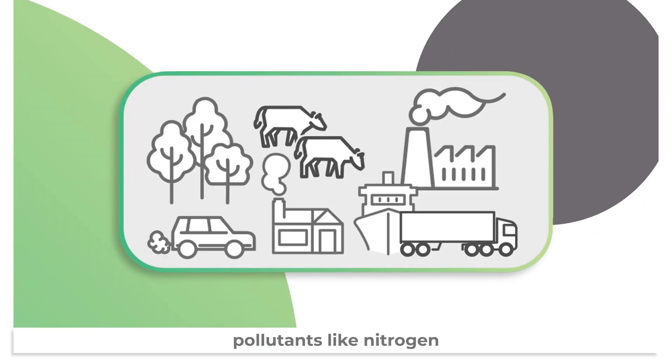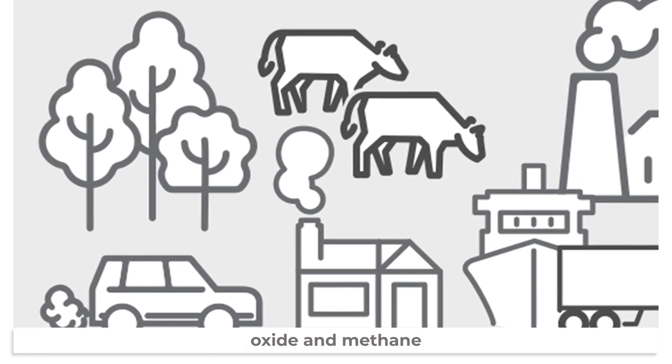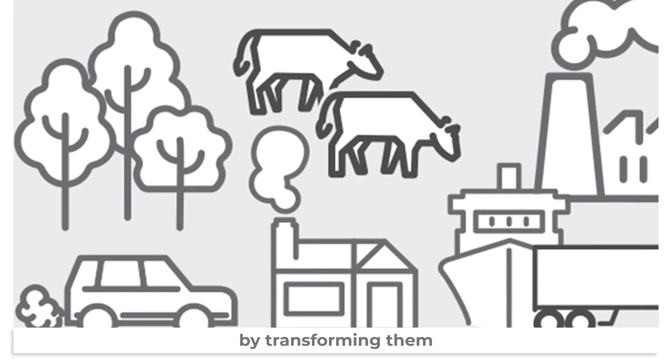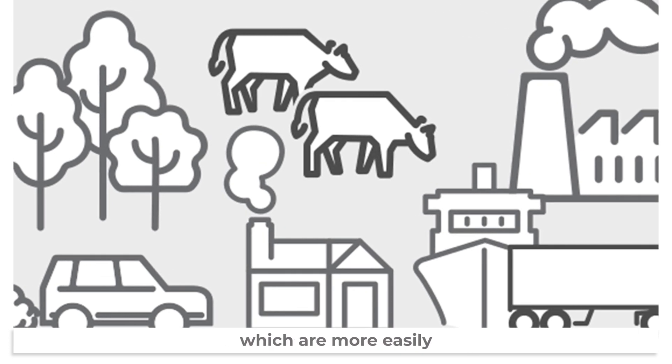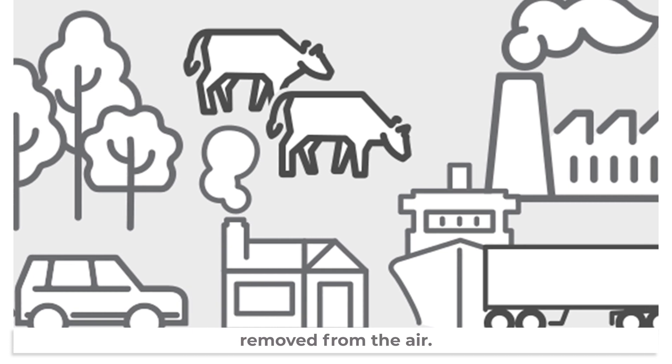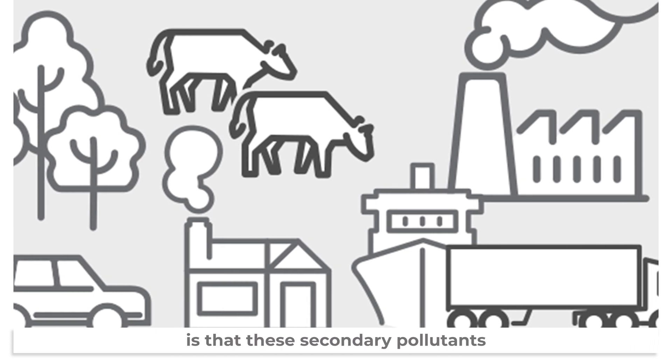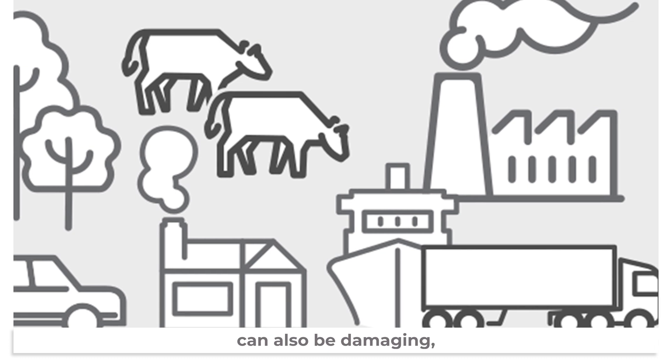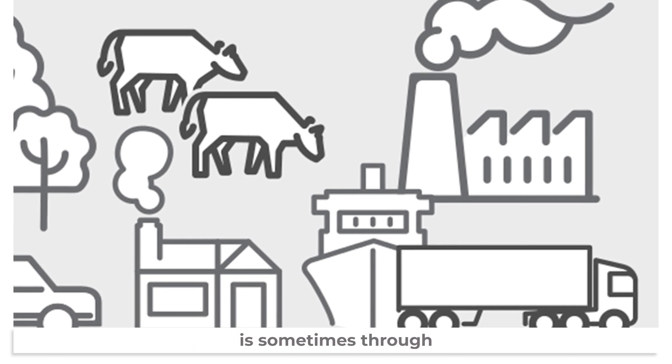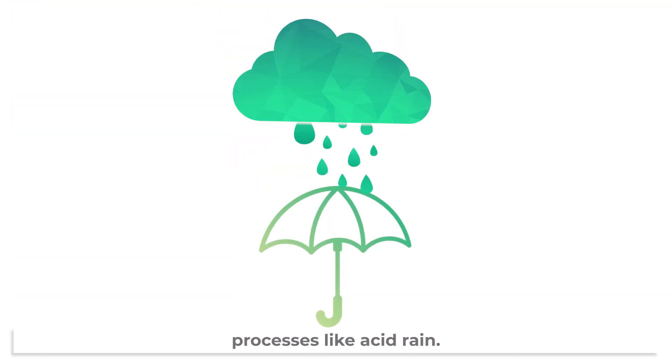Radicals help to regulate harmful pollutants like nitrogen oxide and methane by transforming them into oxidized versions, which are more easily removed from the air. But the side effect is that these secondary pollutants can also be damaging, and the removal of pollutants is sometimes through processes like acid rain.